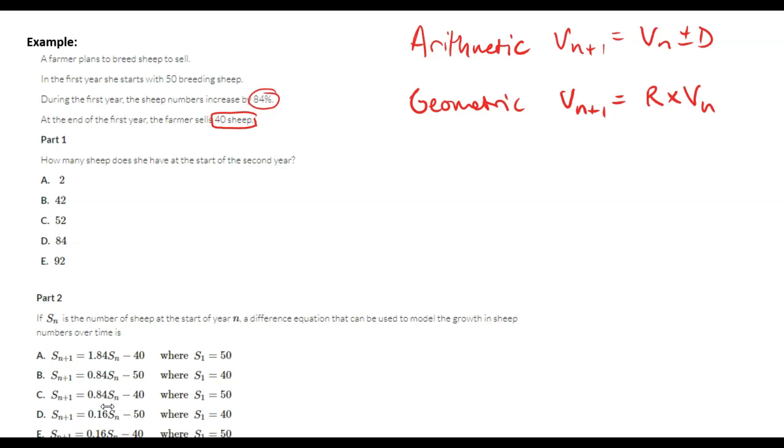If we work out how much they have at the start of the second year - in the first year they start with 50, so that would be v0, and at the start of the second year that would be v1.